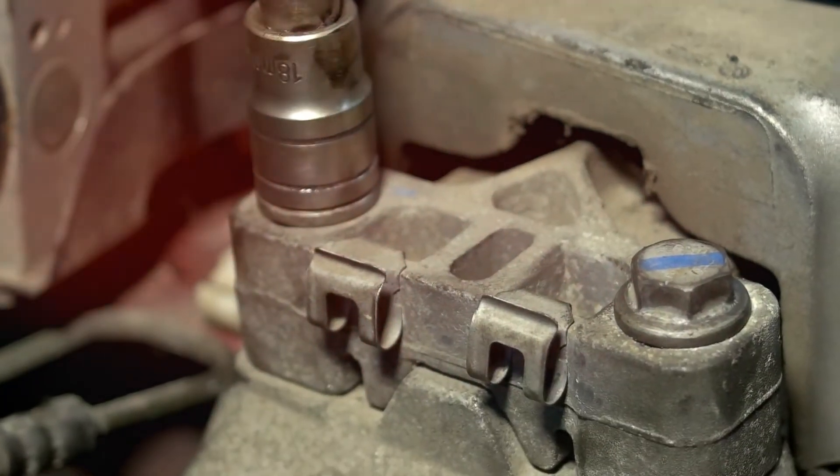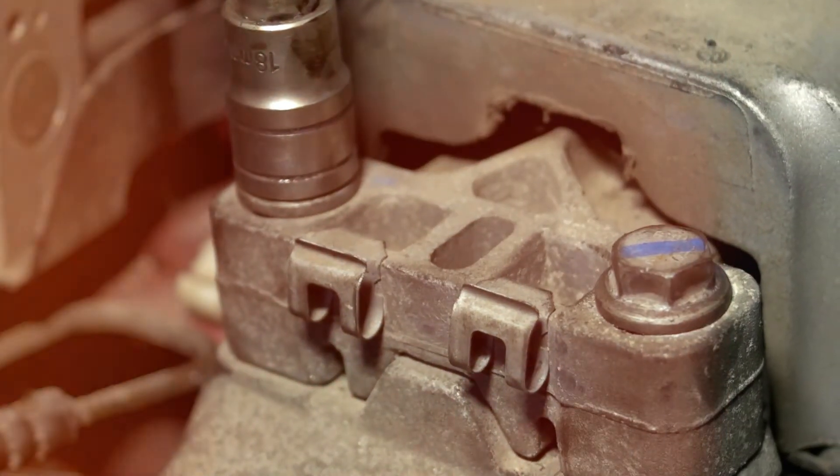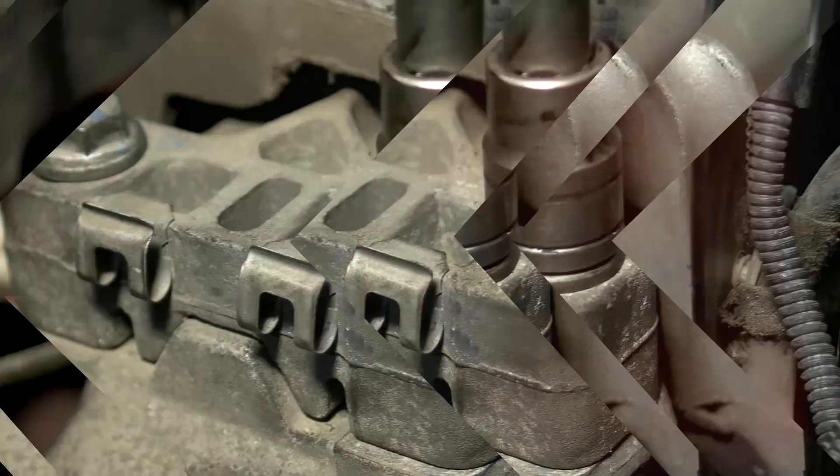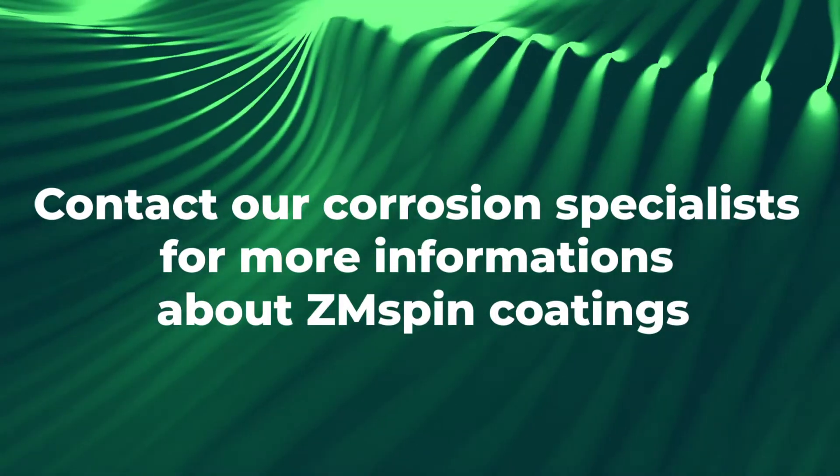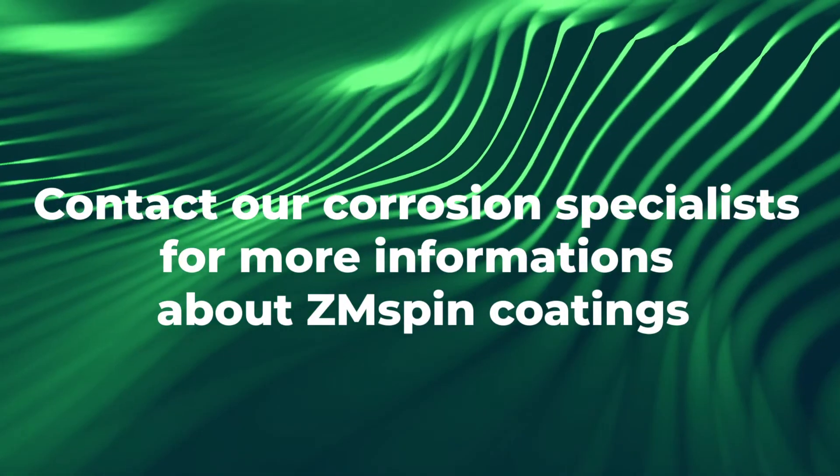ZM Spin coating applied on fasteners allows unifying anti-corrosion protection used for automotive components, thus constituting an alternative for zinc flake coatings. Contact our corrosion specialists for more information about ZM Spin coatings.